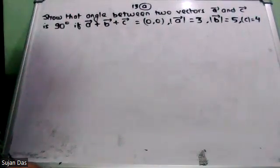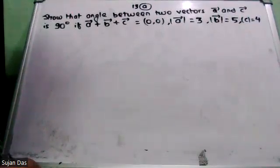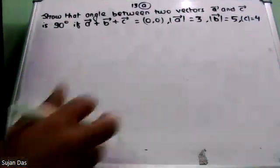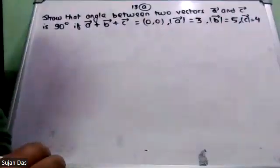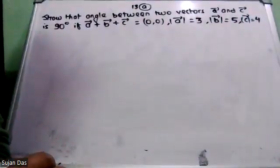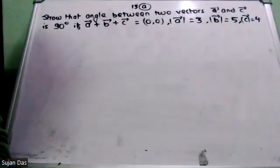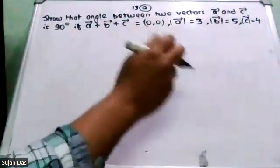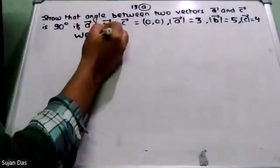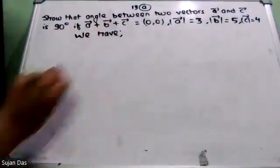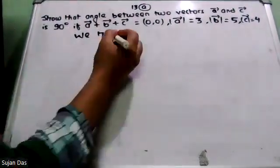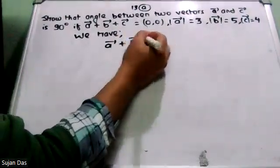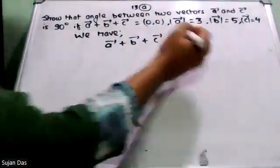The next question: the angle between vector A and vector C is 90 degrees. If vector A plus vector B plus vector C equals zero — this is the question. So, vector A plus vector B plus vector C equals 0.